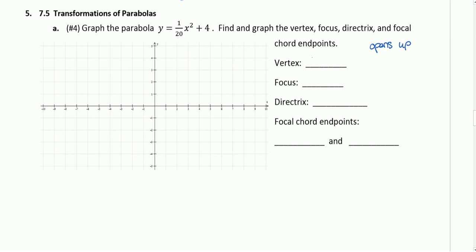The vertex is going to be at zero, positive four. The vertex comes from the fact that there's no number with the X in parentheses, so zero is our X value for the vertex. And that plus four is where we're getting our Y value for the vertex. So I'm going to plot our vertex at zero, four. And now I want to find the focus.